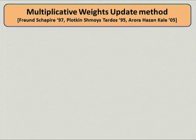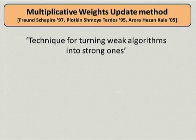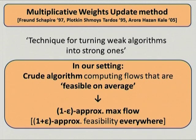The key point is that we already know how to make such a crude algorithm useful: the multiplicative weight update method. This stems from the work of Freund and Schapire on boosting, the work of Plotkin, Shmoys, and Tardos on Lagrangian relaxations, and was cast in a uniform framework by Arora, Hazan, and Kale. In one sentence, it is a technique for turning weak algorithms into strong ones. In our setting, it allows us to take this crude algorithm and, by calling it repeatedly with different weights, recover an approximate solution to the maximum flow problem.